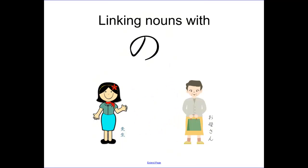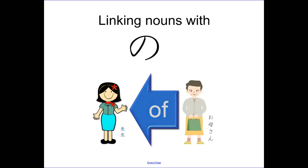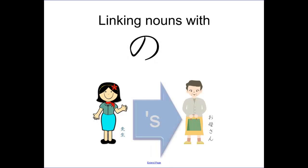On the right hand side we have okasan or mother, and on the left hand side we have sensei. We're going to link these two together to show that the okasan or the mother is of the sensei. In English we could say she is the teacher's mother. Now in Japanese instead of apostrophe s we use particle NO. Sensei no okasan, the teacher's mother.